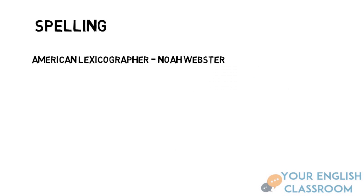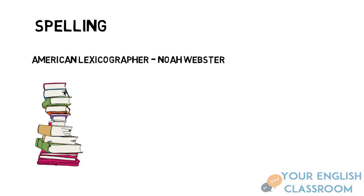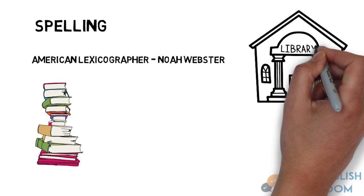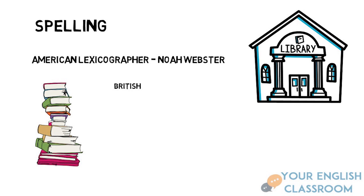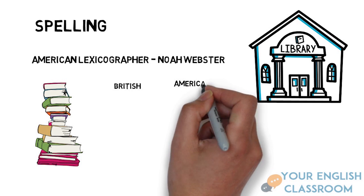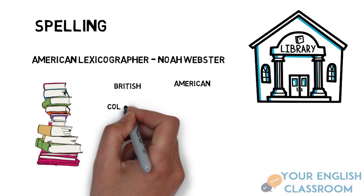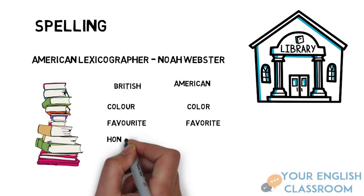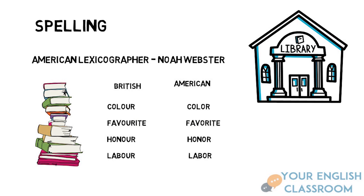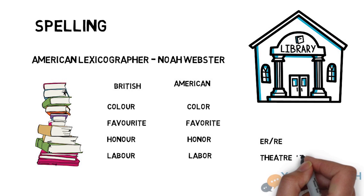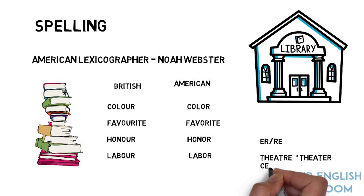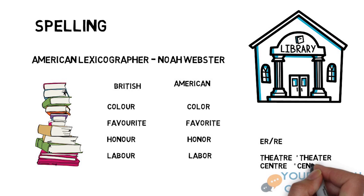So what about spelling? There are hundreds of minor spelling differences between British and American English. You can thank American lexicographer Noah Webster, who was responsible for making those Webster dictionaries you may know. He wanted to spell words the way they sounded and attempted to change them. For example, with many words such as 'colour', Americans remove the U, which makes their spelling easier. Also, British spelling uses RE whereas American uses ER.